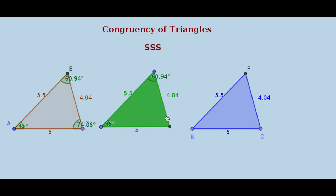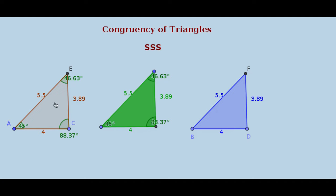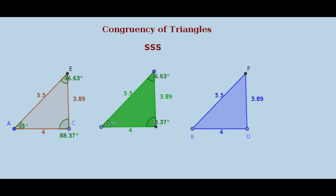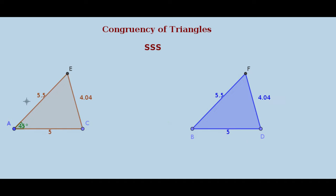Here, angle A is 45 degrees. The corresponding angle is equal. Angle E measures 60.94 degrees — here also 60.94. The measure of angle C is 74.96 degrees — here also 74.96. The measure of angle E is 74.06 degrees, so the three angles are also equal. We can decide congruency by knowing three elements of one triangle with the three elements of the other triangle.